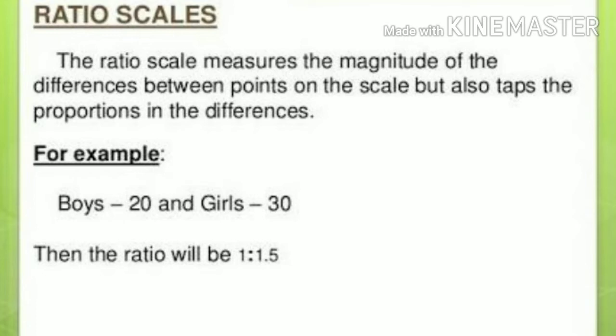The last one is ratio scale, which is used when variables can be categorized, ranked, and expressed in equal intervals and can have an absolute zero value. Please note, in ratio scale we can have an absolute zero value — that is, the starting point of the scale is taken as zero. Ratios can be calculated using this measurement. For example, monthly views on a YouTube channel can be expressed as: this month we had thrice the number of views than last month.